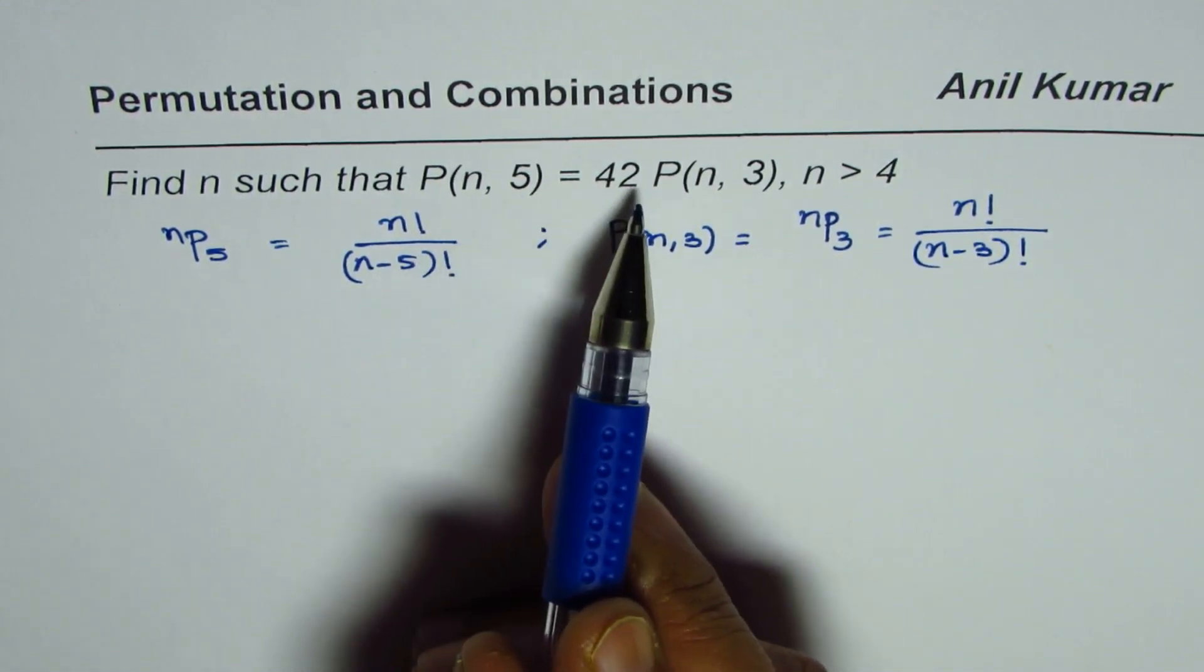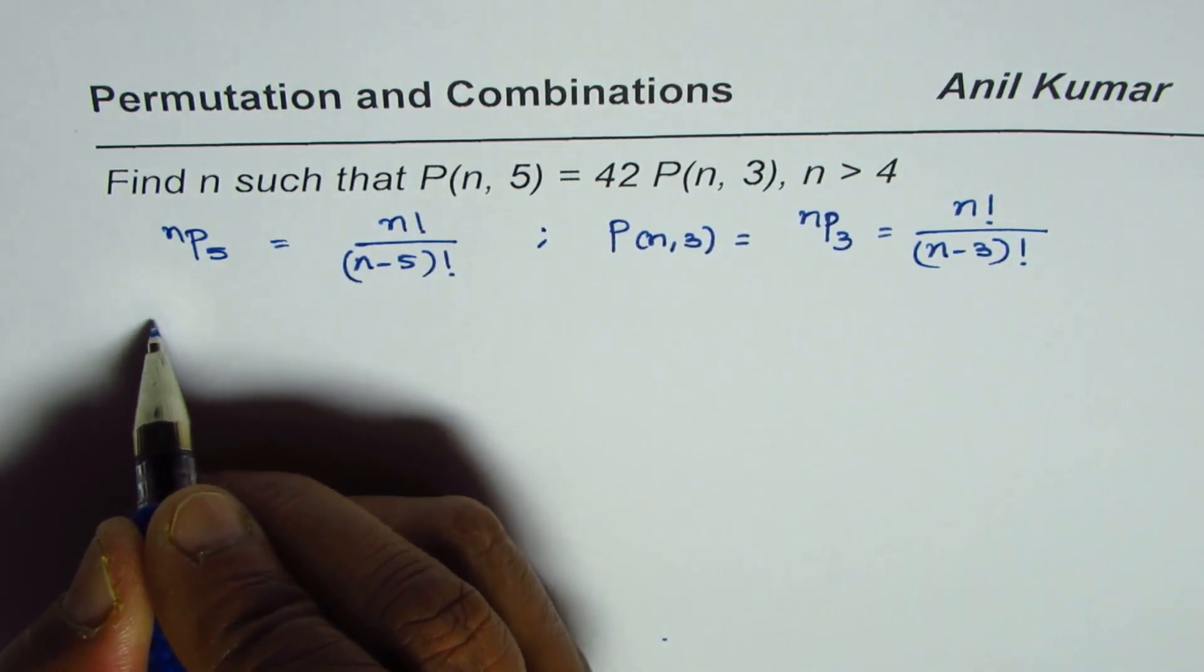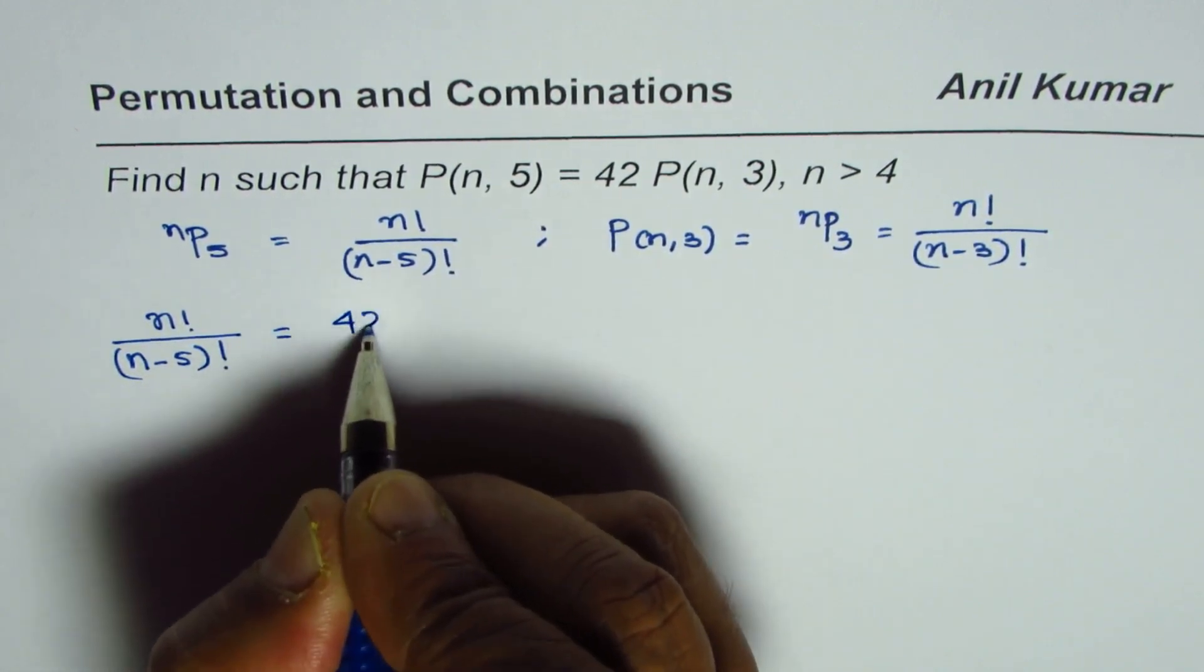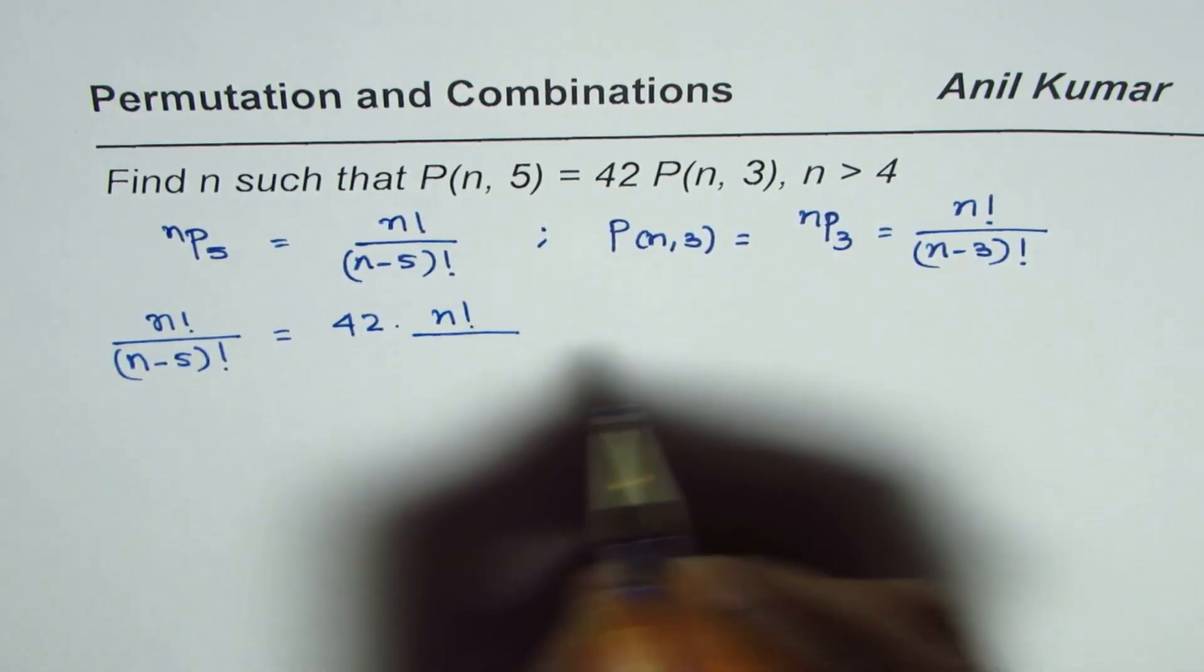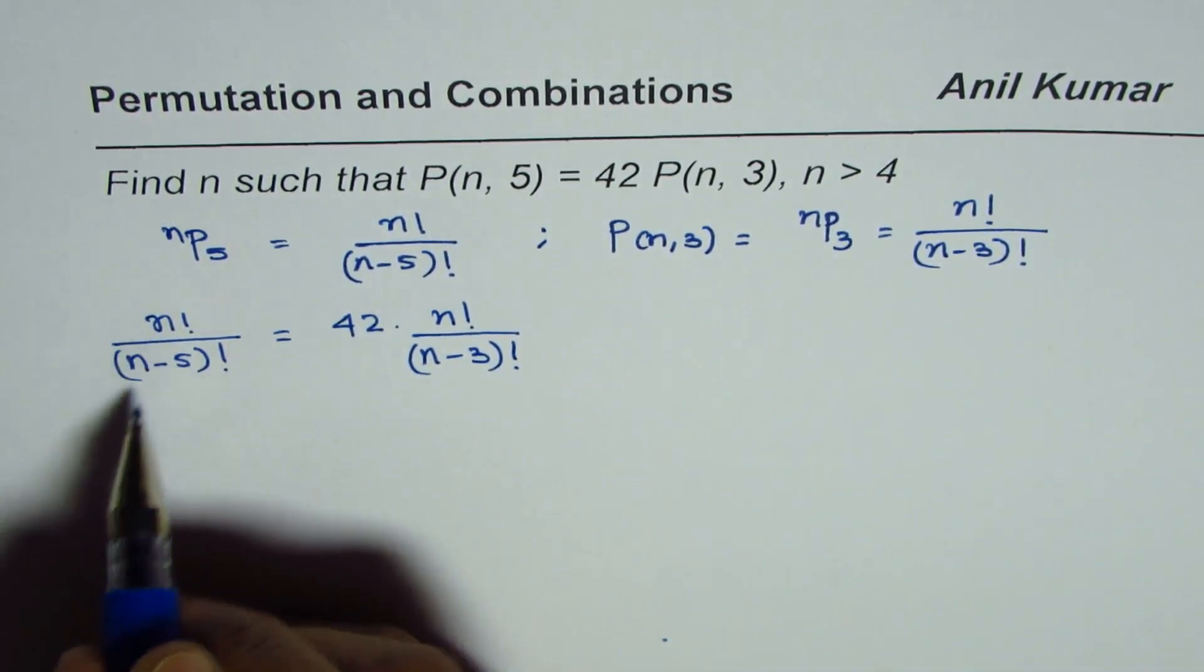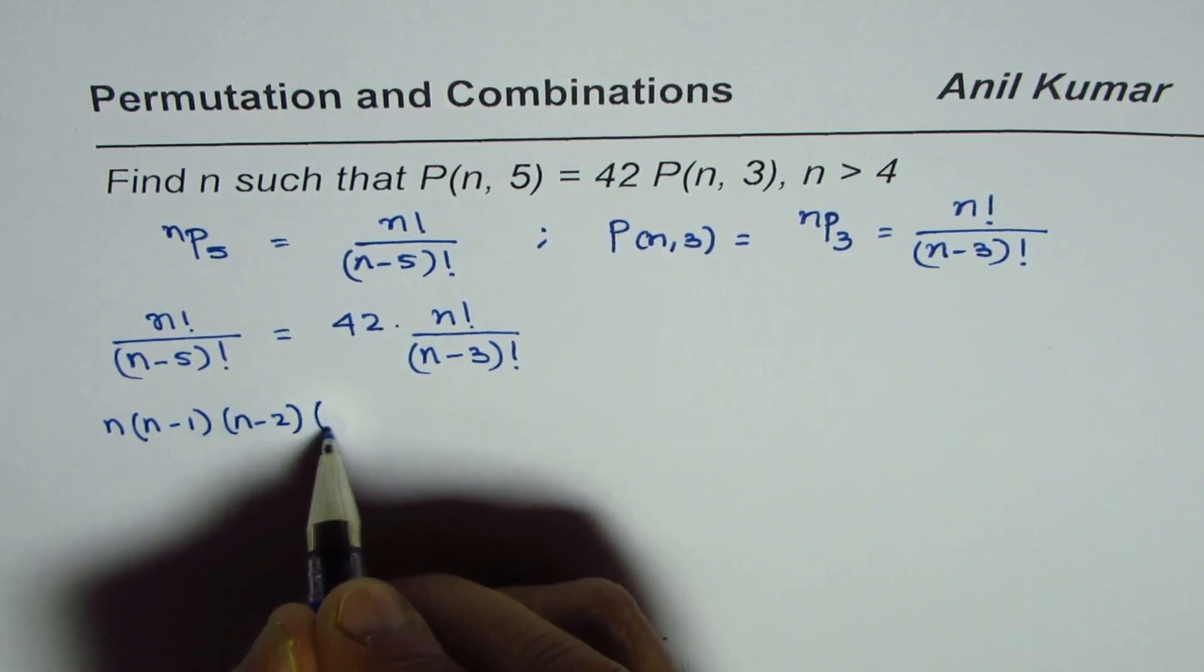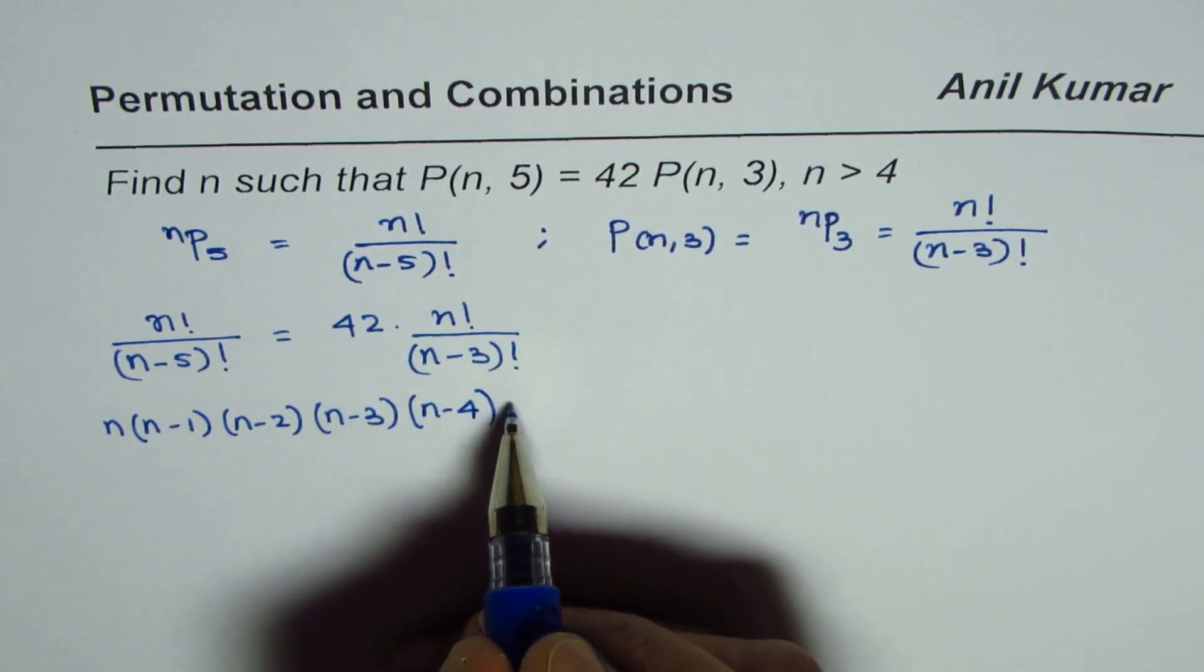Now we will replace them in the given equation and then find n. So we could write this as n factorial divided by (n-5) factorial equals 42 times n factorial divided by (n-3) factorial. Now n factorial divided by (n-5) factorial is n times (n-1) times (n-2) times (n-3) times (n-4) times (n-5) factorial.